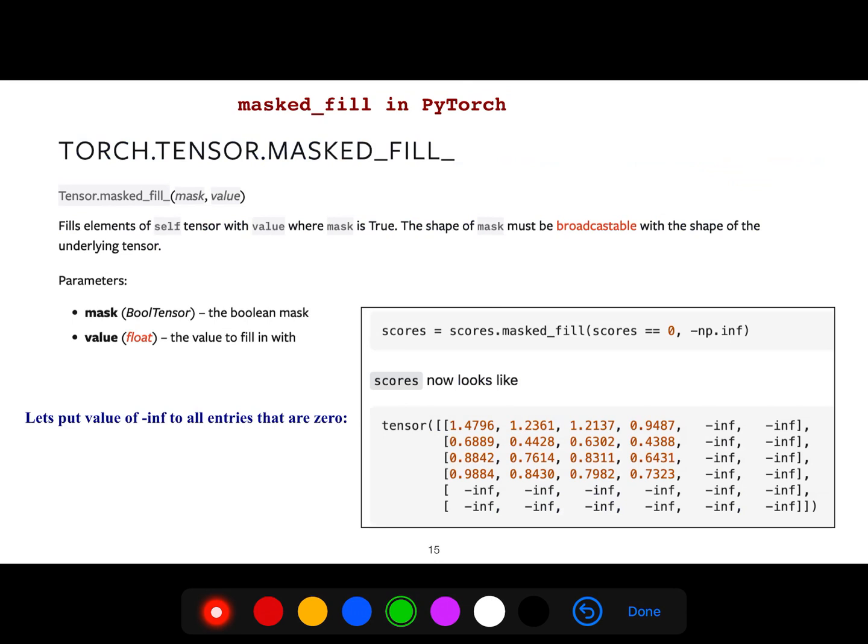And what is mask fill in PyTorch that we always use it? You see, we have sometimes, this means that whenever there is a score equal to zero, put it minus infinity. Whenever the scores of this tensor is equal to zero, instead of that put minus infinity. And that's why we can produce such a matrix, such a tensor.